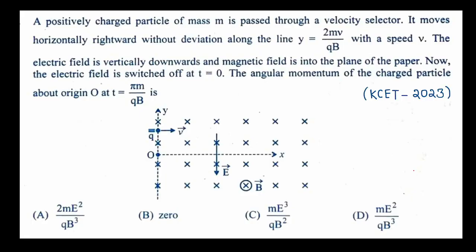A positively charged particle of mass m is passed through a velocity selector. It moves horizontally rightward without deviation along the line y equals 2mv by qb with a speed v. The electric field is vertically downward and magnetic field is into the plane of the paper. The electric field is switched off at t equals 0. The angular momentum of the charged particle about the origin at t equals pi m by qb is our question.